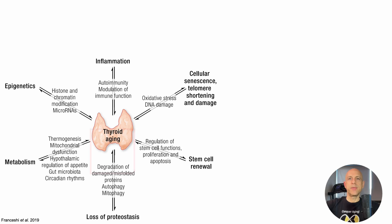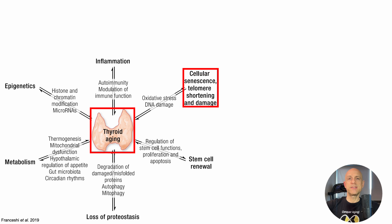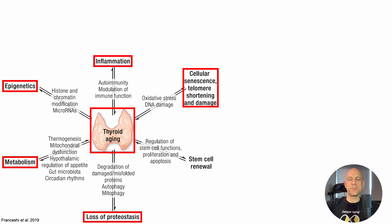Thyroid aging is impacted by and impacts many hallmarks of aging, including cell senescence and telomere shortening, inflammation, epigenetics, metabolism, loss of proteostasis, and stem cell renewal.